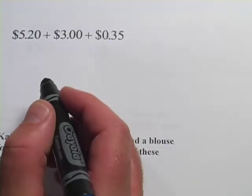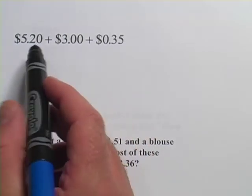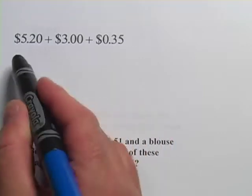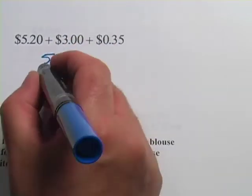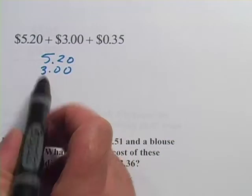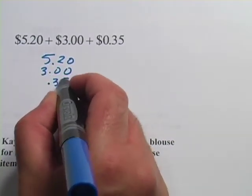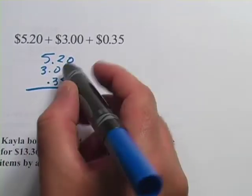In this problem, we're adding money, and there's nothing too hard about that, except that when you line these up, when you stack them up to add, you want to make sure that the decimal point is in the same place for all of these numbers. So I'll start with the 5.20, and then I'll line the $3 up with the decimal point in the same place, and then the 35 cents right there. As long as I have them lined up so that the decimal points match, then it's pretty easy.